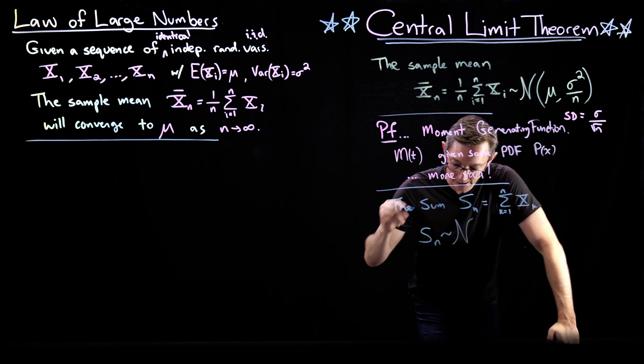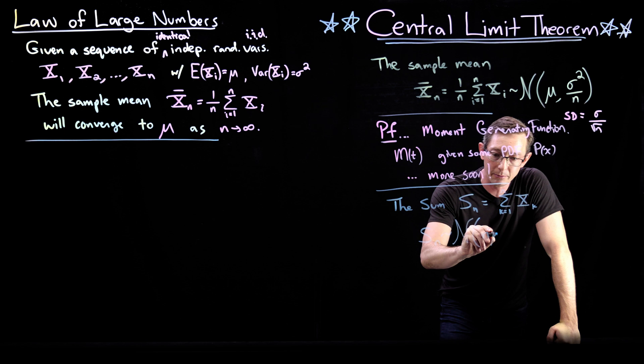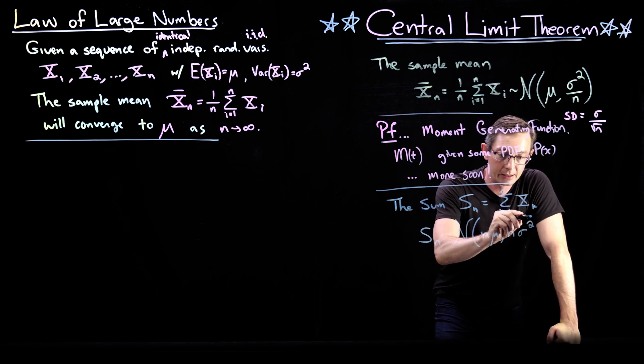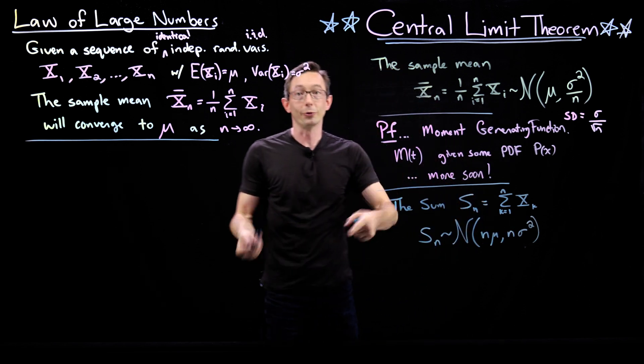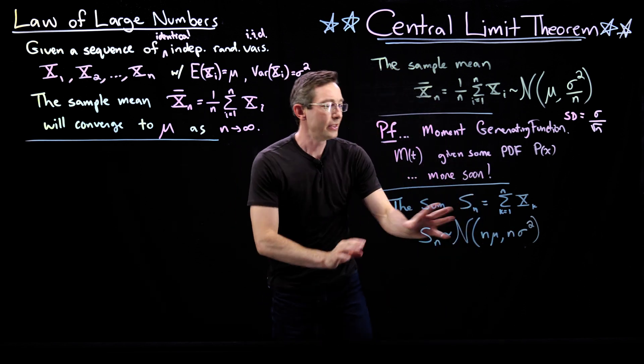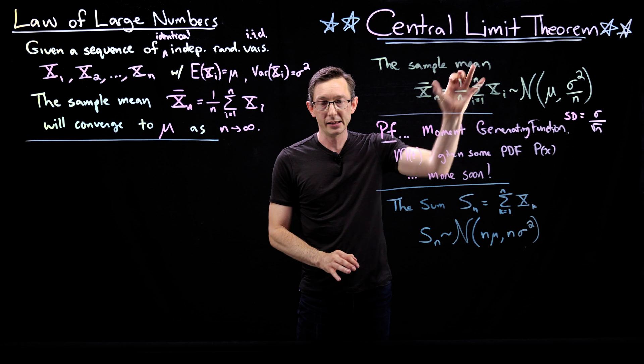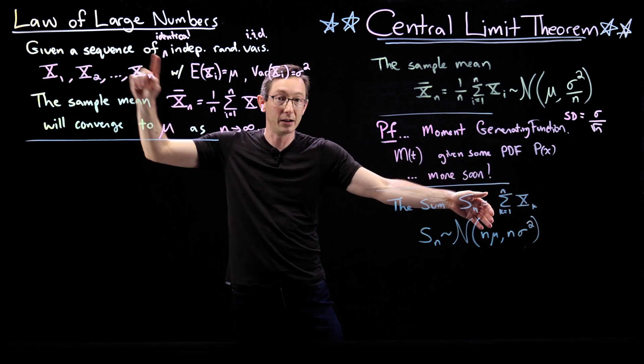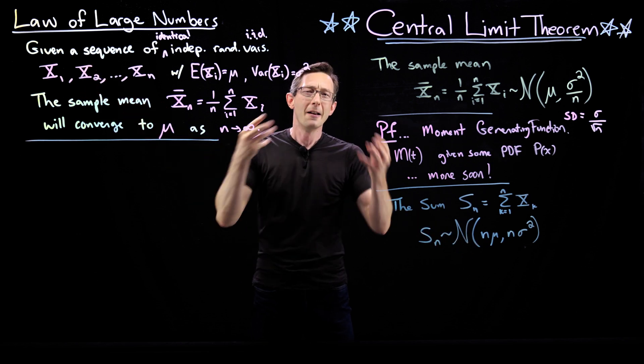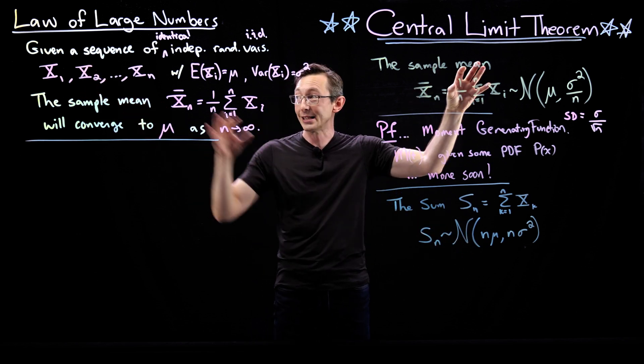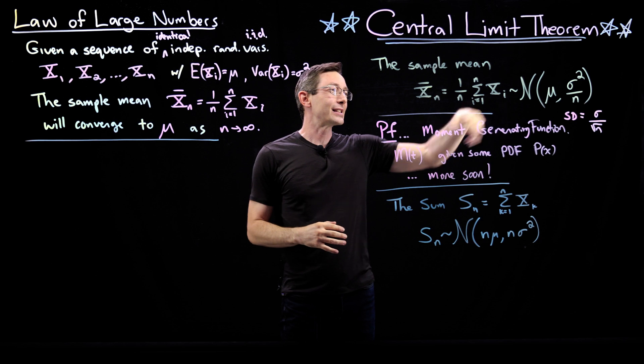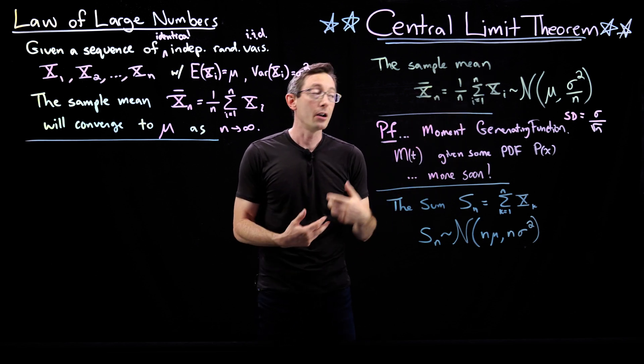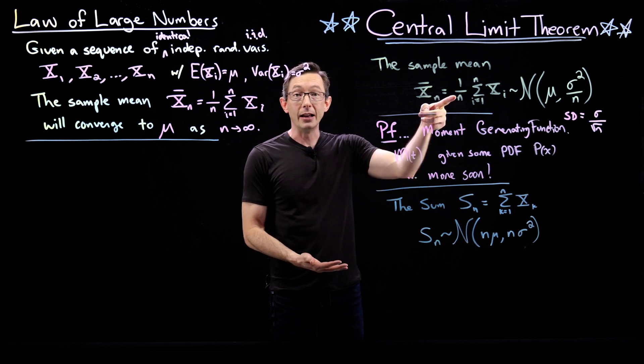We can also say that this sum S N is normal, is a normally distributed random variable. And now its mean is N mu and its variance is N sigma squared or its standard deviation is root N sigma. So this and this are essentially completely equivalent statements, but sometimes you're going to see the central limit theorem just stated as how the sum of these variables is distributed.